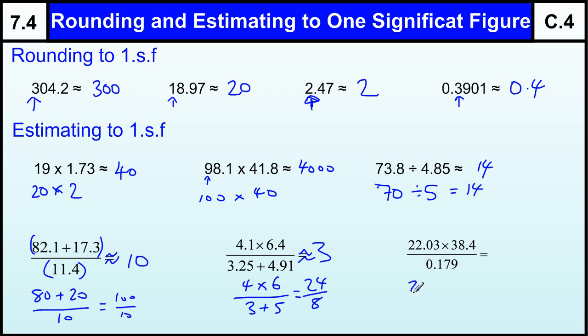And then we'd have twenty times forty over 0.2. Twenty times forty is eight hundred. Two fours are eight, two zeros. Divided by 0.2.